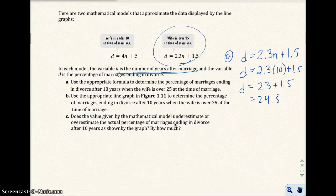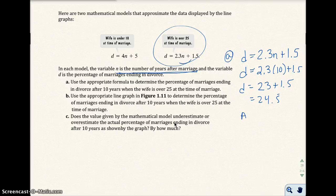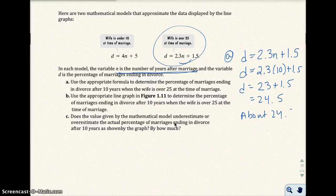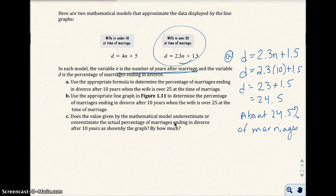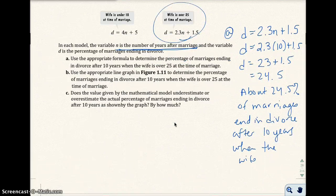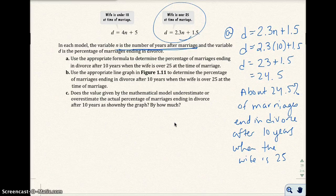So in part A, about 24.5% of marriages end in divorce after 10 years when the wife is over 25 at the time of marriage.